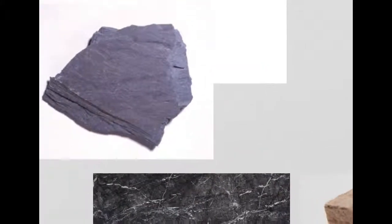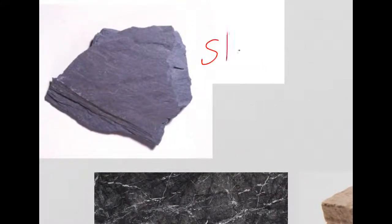Another metamorphic rock is slate, commonly used on roofs of houses. Slate is formed from mudstone, which is changed by heat. This is another example of a metamorphic rock.